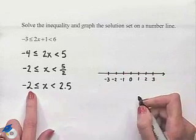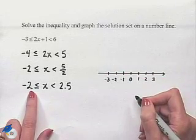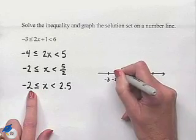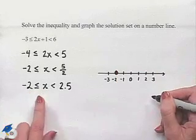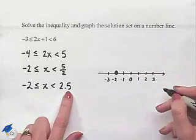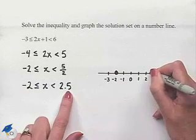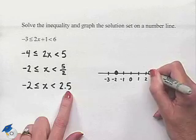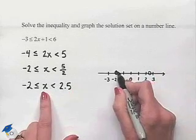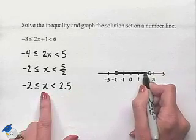Now we'll start at our border of -2. We notice that our solution can include that value, so we're going to draw in a closed circle at -2. Next, we notice that we have a value of 2.5. That's midway between the 2 and the 3. We'll draw an open circle. All of our values are going to be between these two points, and so we'll shade in the region between there in order to graph our solution set.